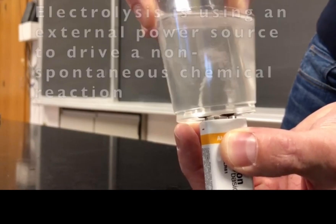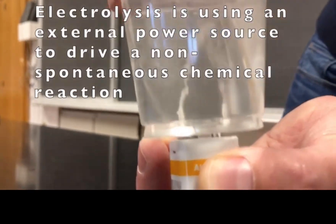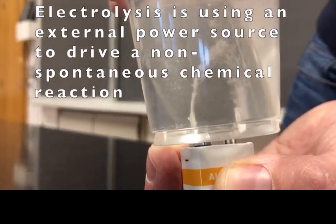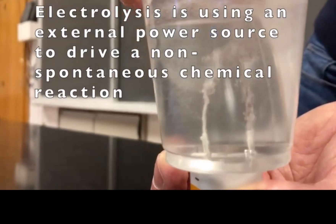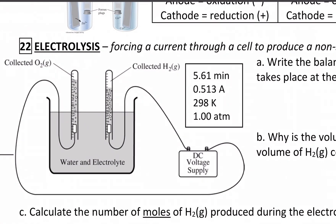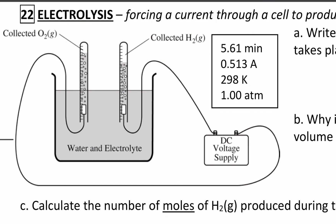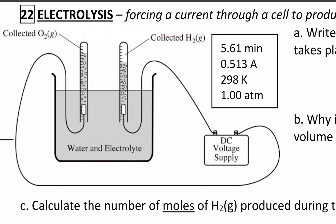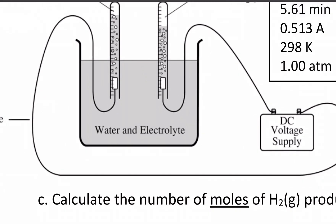That's water decomposing into hydrogen gas and oxygen gas from an external power supply — a non-spontaneous reaction happening due to electrolysis. This is how we get most of the elements on the periodic table in their elemental form, since most elements are not found in nature in their elemental form. Here's a schematic of exactly what we just saw, with collected oxygen and collected hydrogen.